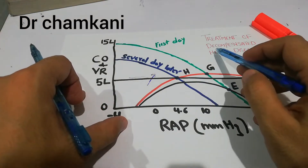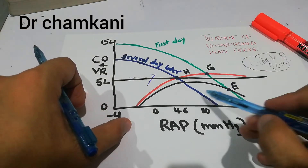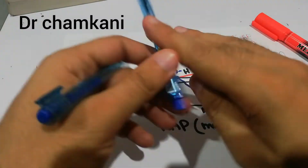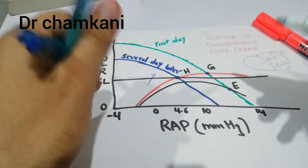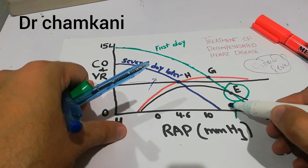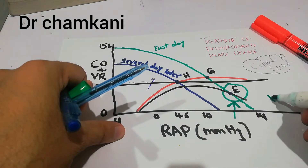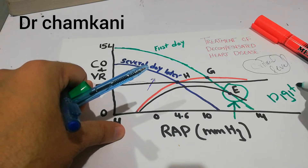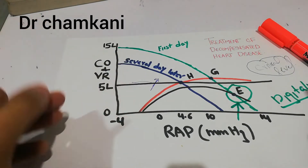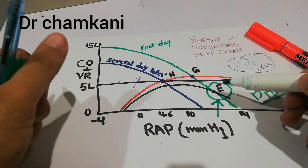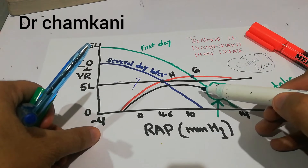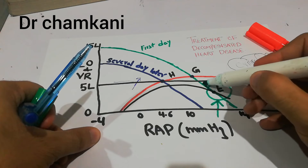Now, how are we going to treat this? Here we have the treatment of the decompensated heart failure. At point E, we start treating the heart with digitalis — a drug which basically increases the pumping power of the heart. When treatment starts, the cardiac output increases from point E to point G.